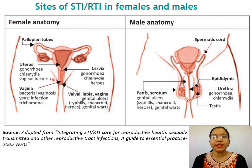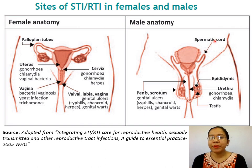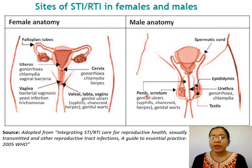In this figure, you can see the sites of STIs and RTIs in females and males. In females, it may affect the fallopian tubes, uterus, cervix, vagina, and the external genitalia. In males, it may affect the spermatic cord, epididymis, urethra, and testis. Sometimes the penis and scrotum may also be affected.